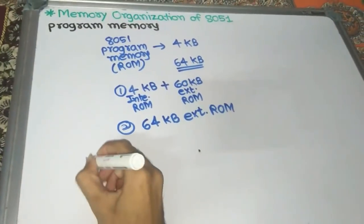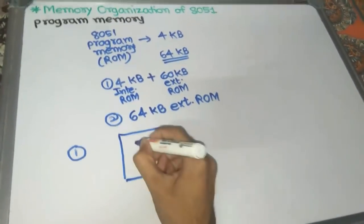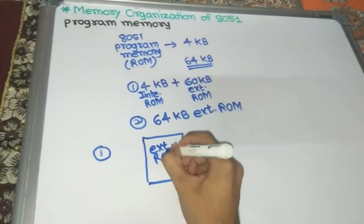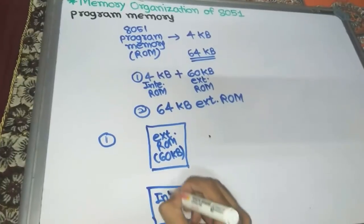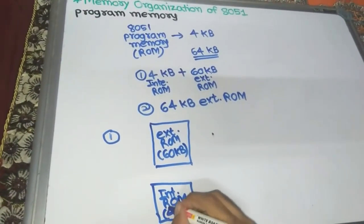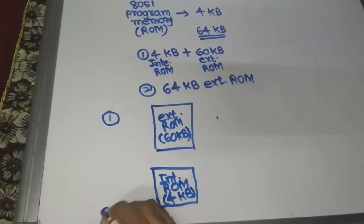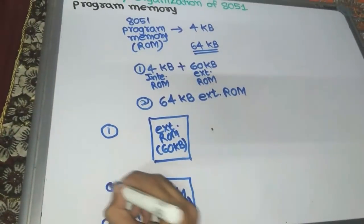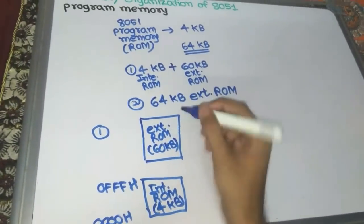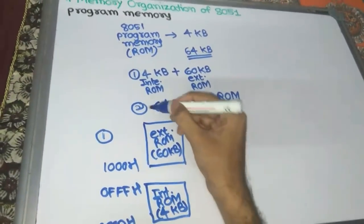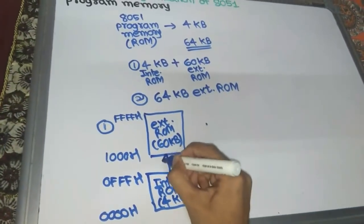For the first option, the external ROM is 60KB and internal ROM is 4KB. The internal ROM (4KB) has address range 0000H to 0FFFH, and the remaining 60KB external ROM has address range 1000H to FFFFH. So if you want this combination, you use internal ROM plus external ROM: 4KB internal plus 60KB external.